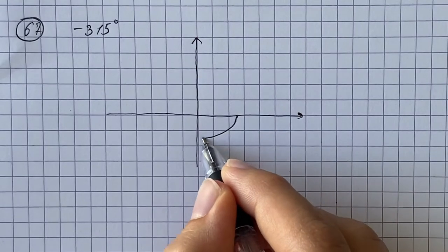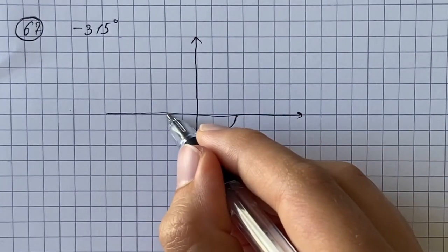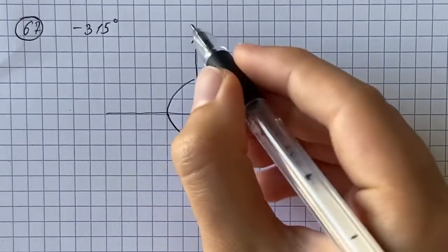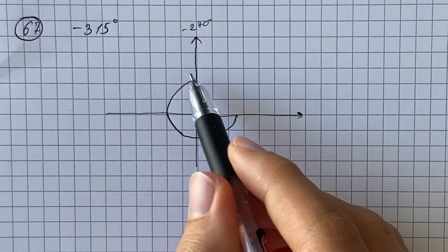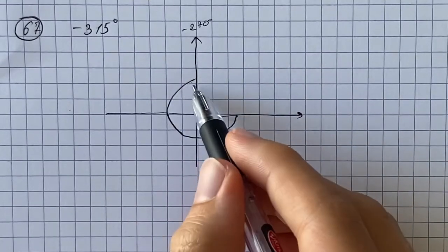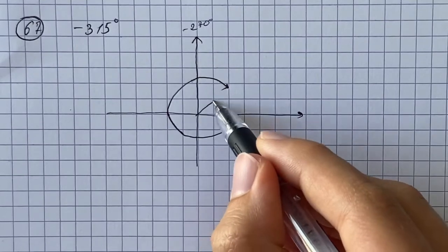That would be negative 180 degrees. Then we need also 90 degrees to get negative 270 degrees, and lastly 45 degrees, which is in the middle of the first quadrant.